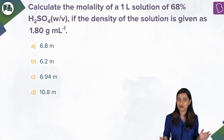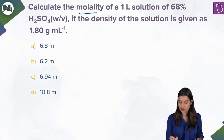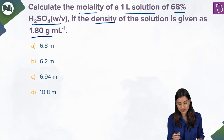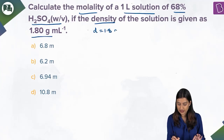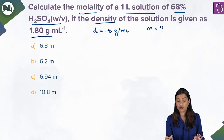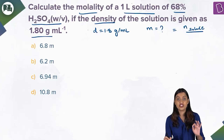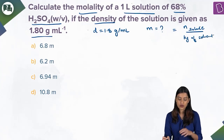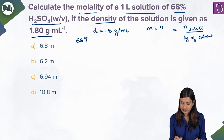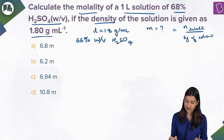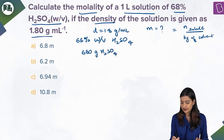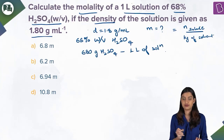Here we have a question from the interconversion of concentration terms studied in the chapter mole concept. Calculate the molality of a one-liter solution of 68% H₂SO₄ weight by volume, if the density of the solution is 1.80 g/mL. Molality is the number of moles of solute per kg of solvent. They've told us it is 68% weight by volume H₂SO₄, which means in one liter of solution there are 680 grams of H₂SO₄.